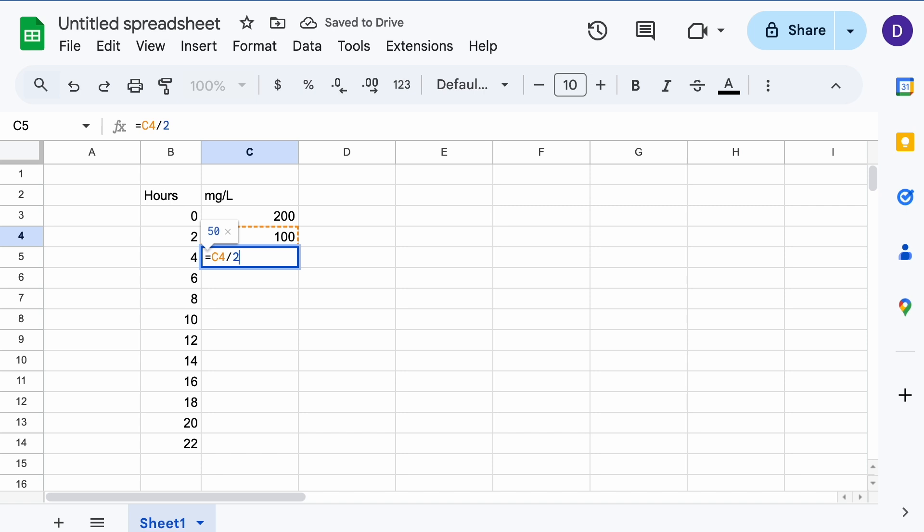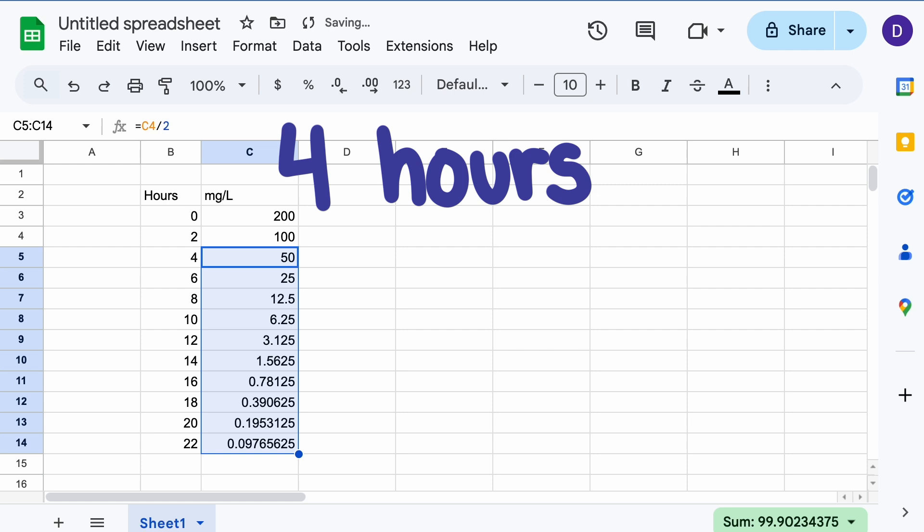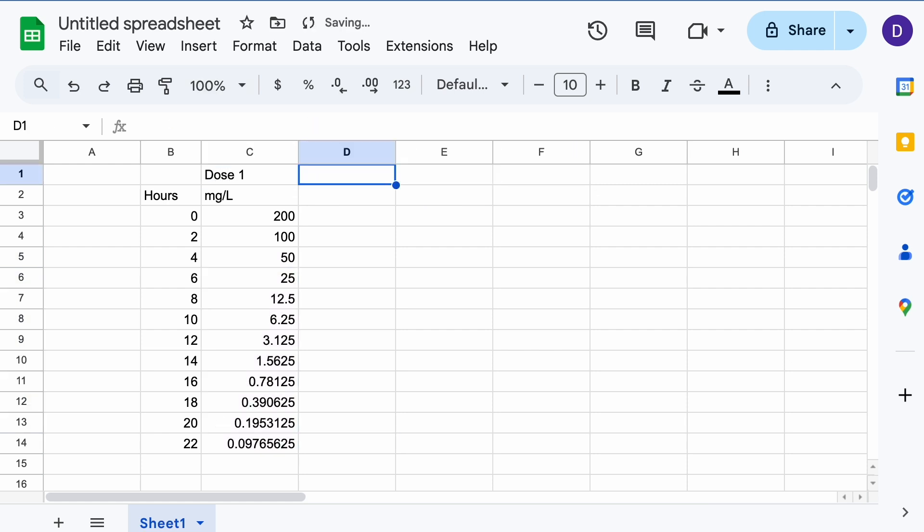In two more hours, it would be 50 mg per liter. But patients can be administered another dose in as little as four hours, although six is more common. But let's see what happens when a second dose is administered at four hours.